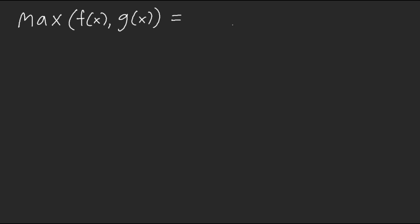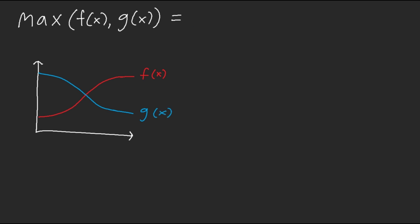Let's do f(x) and g(x). The max function equals whichever function is maximum depending on the interval. Let's say we have a graph: f(x) looks like this, g(x) looks like this, and we have intervals at A, B, and a point C at that position.